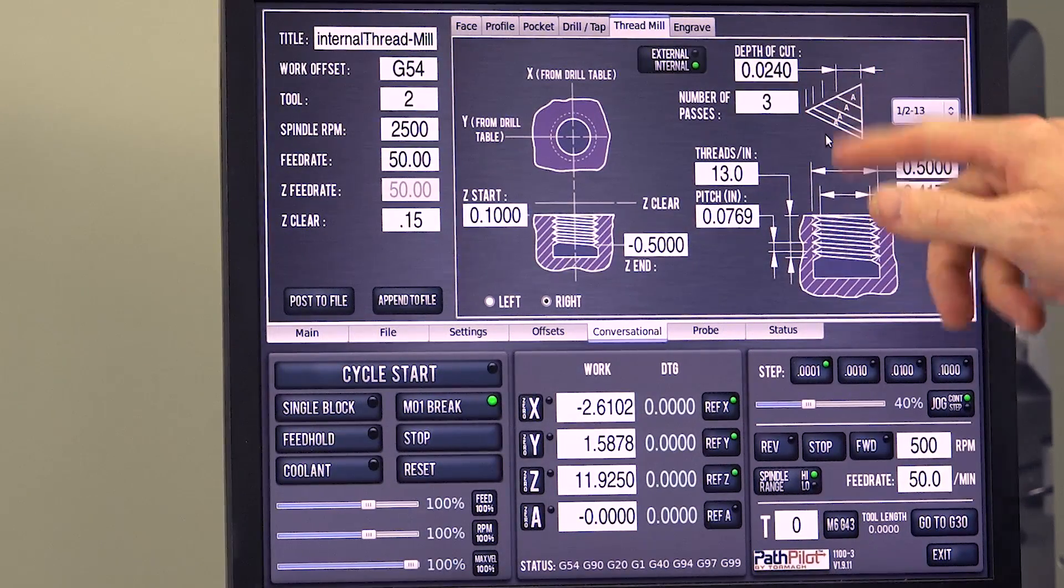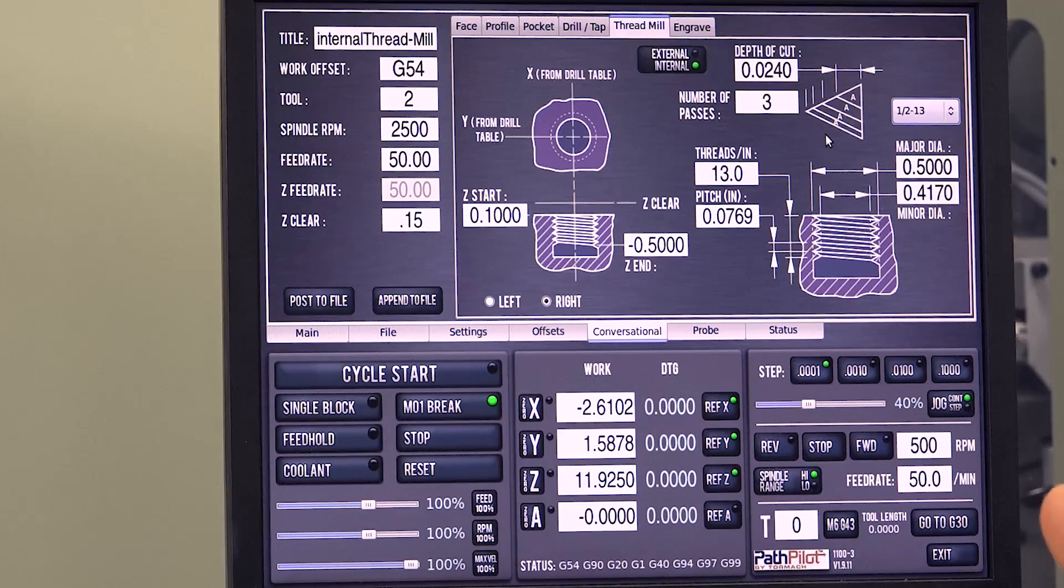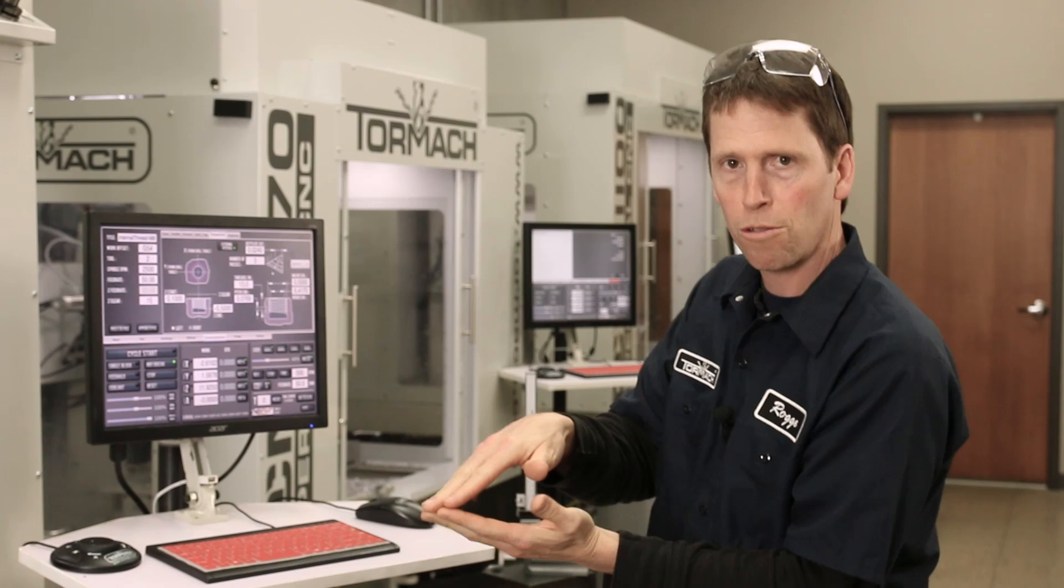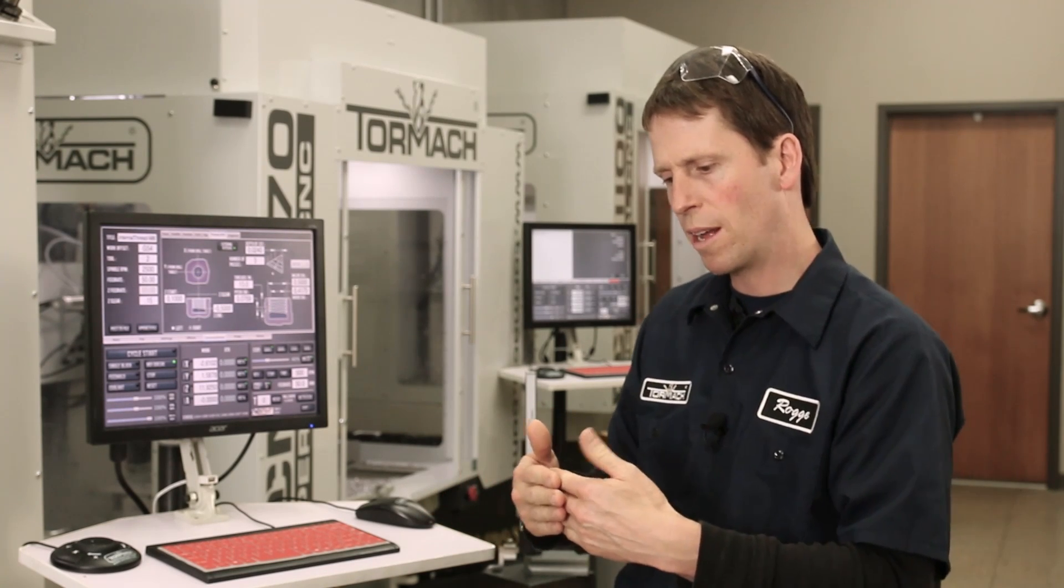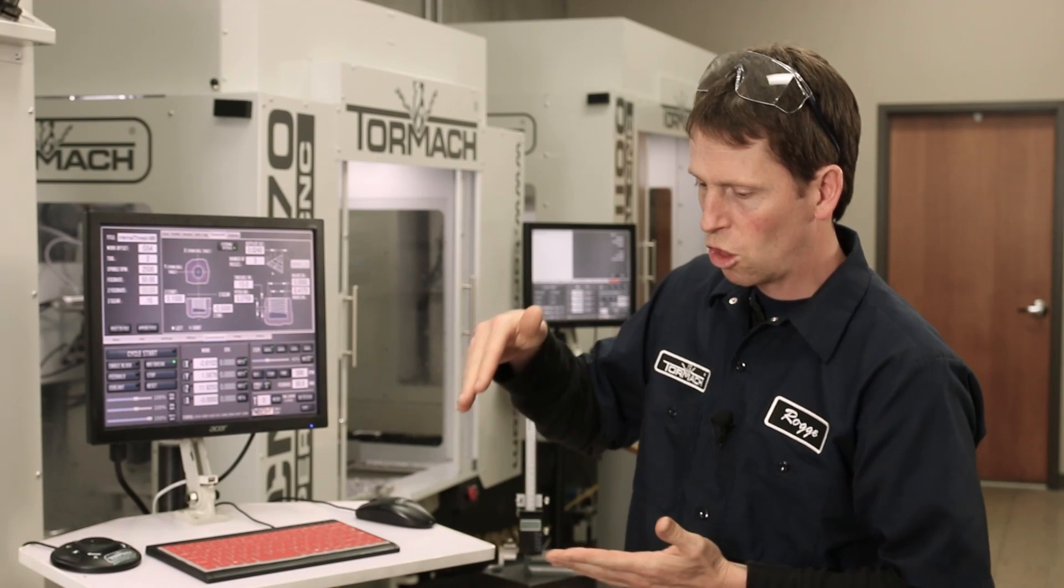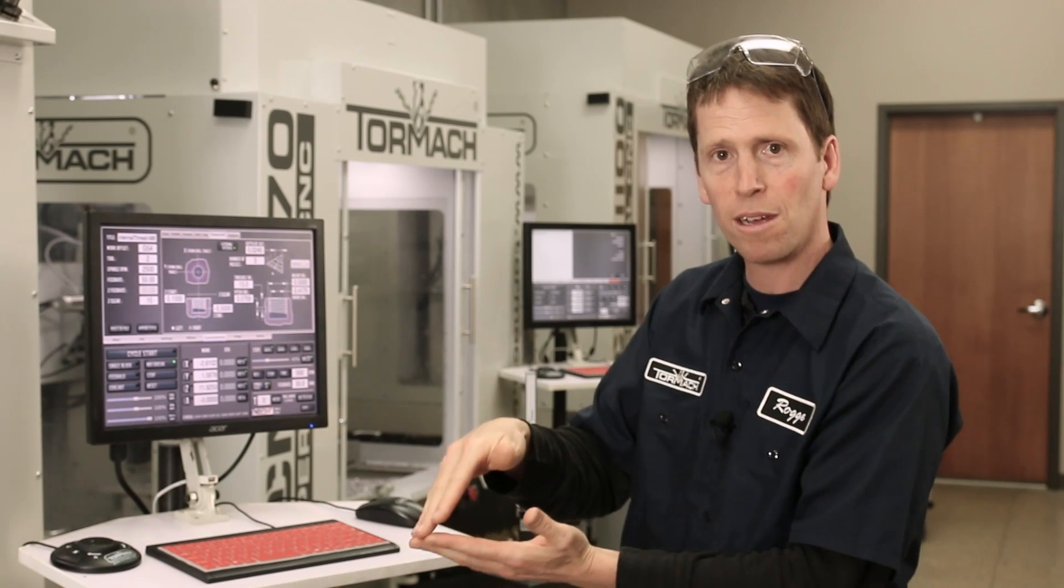What this little graphic is showing is that we use constant area digression. If you imagine you're poking a triangular form further and further into the workpiece, if I just go in a little bit further because I'm going deeper, it's a much larger chip area that I'm taking with every pass.